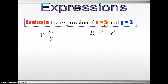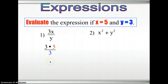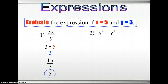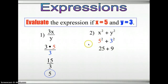This time we're using x and y. x is 5 and the value of y is 3. So replace x by 5 and substitute y by 3. For 3x divided by y: 3 times 5 is 15, divided by 3 gives you 5. Remember we follow the order of operations. x squared means you multiply the same number twice. For x squared plus y squared: 5 squared is 5 times 5, which is 25; 3 squared is 3 times 3, which is 9. So 25 plus 9 is 34.